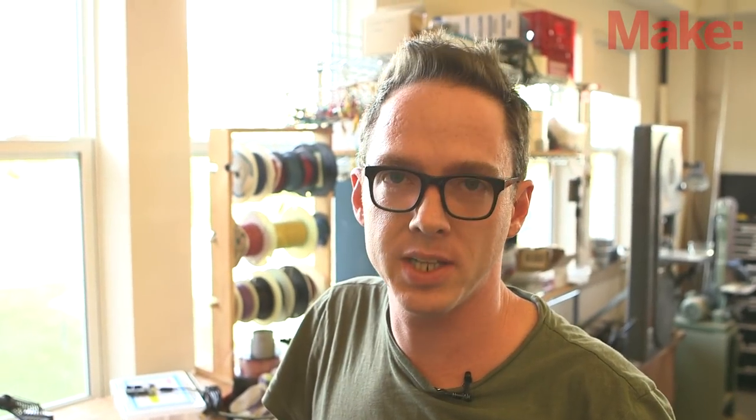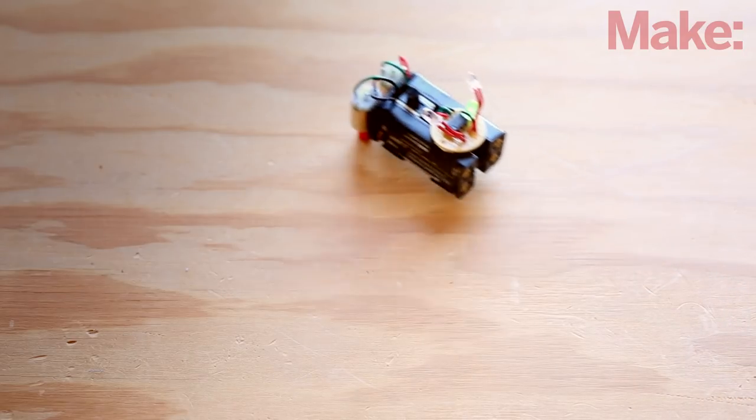Hi, I'm Sean Regan, Technical Editor with Make. Today I want to show you how to build a light-seeking beam robot that uses just a handful of simple components to produce a surprisingly complex behavior. This little robot uses a simple power amplifier chip and two light-detecting eyes to follow the brightest light it can find.